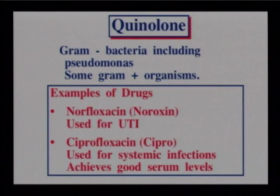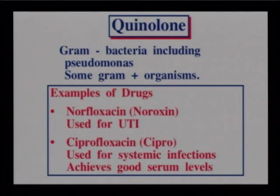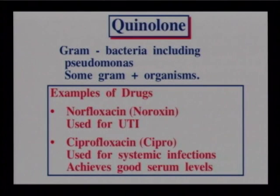Quinolones are often used for UTIs and some systemic infections. Their family name is 'floxacin.' Recognize the floxacins as quinolones — that's the key identification point for this drug class.